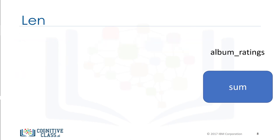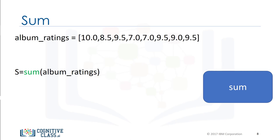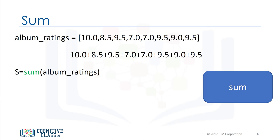The function sum takes in an iterable, like a tuple or list, and returns the total of all the elements. Consider the following list. We pass the list into the sum function and assign the result to the variable S. The function determines the total of all the elements, then returns it. In this case, the value is 70.